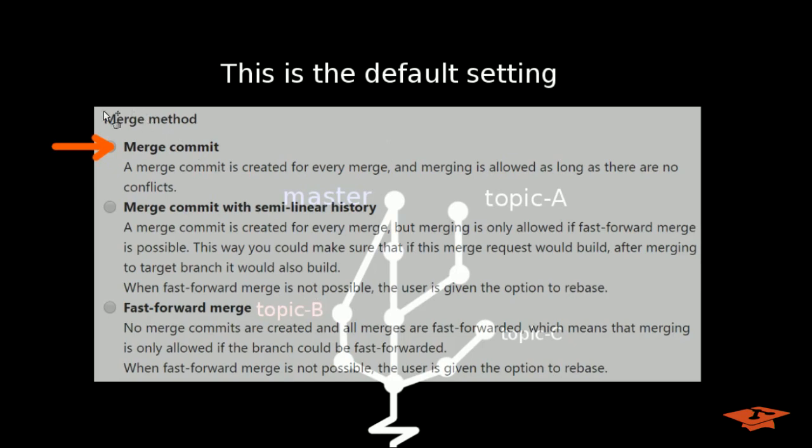Now what we just showed here in this tree is actually the default setting. So this is selected by default. You can see a merge commit is the default action. It's created for every merge, and merging is allowed as long as there's no merge conflicts of course.